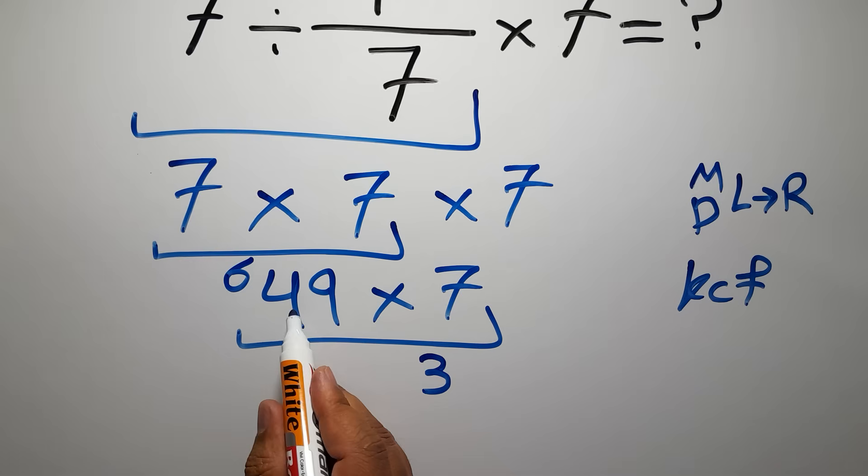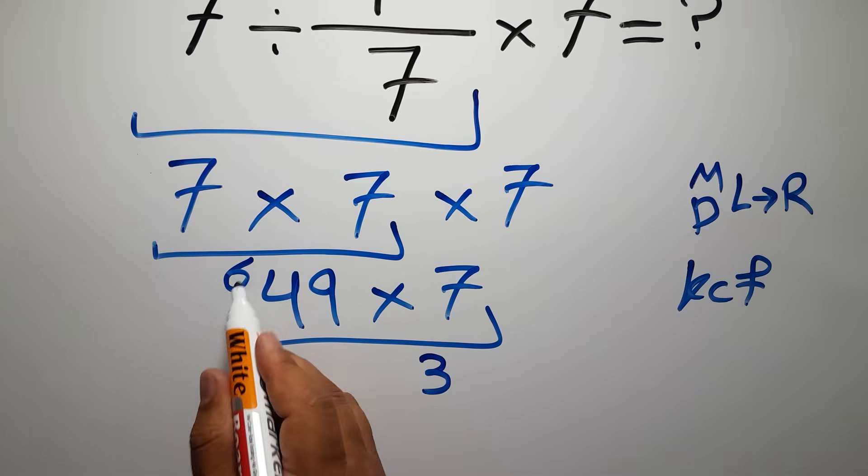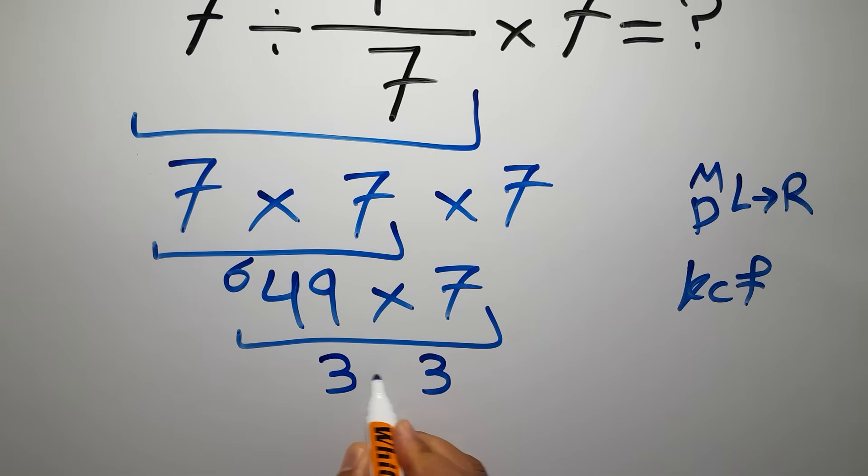7 times 4 gives us 28, and 28 plus 6 gives us 34. So we have 343, and this is our final answer to this problem.